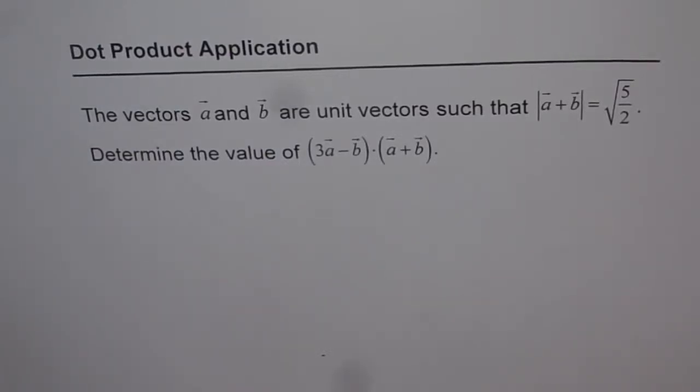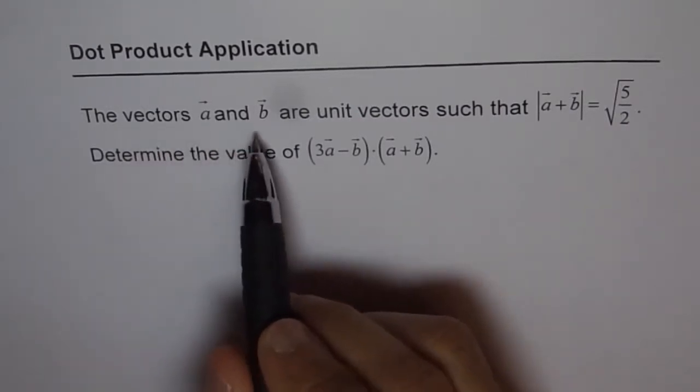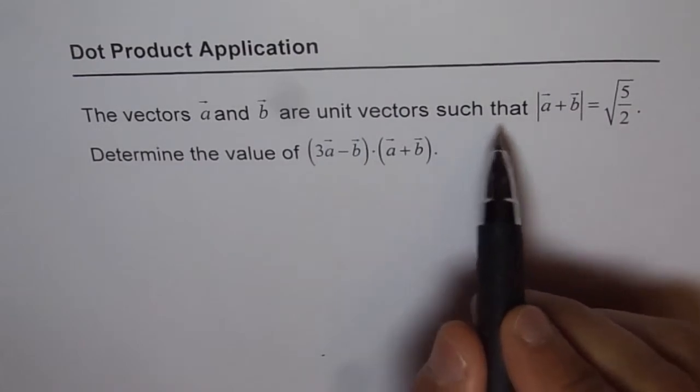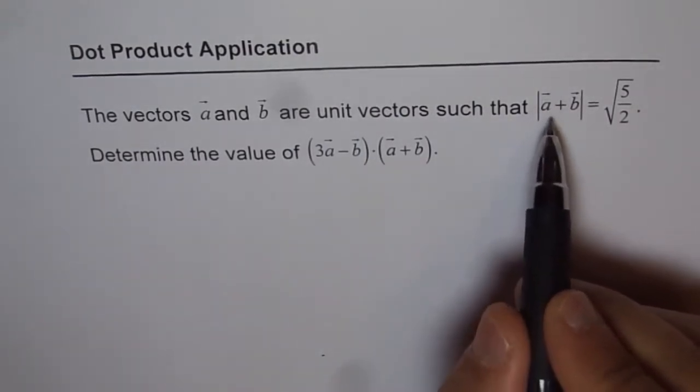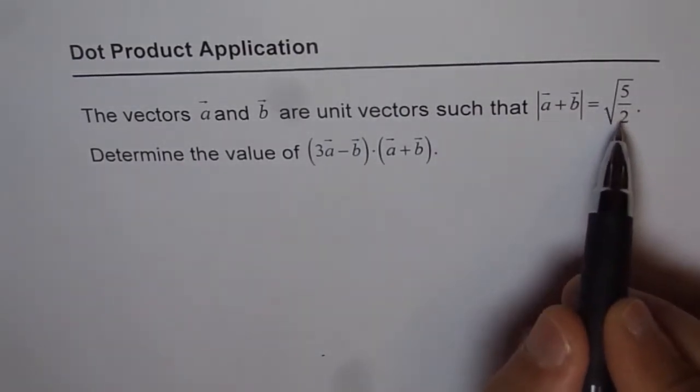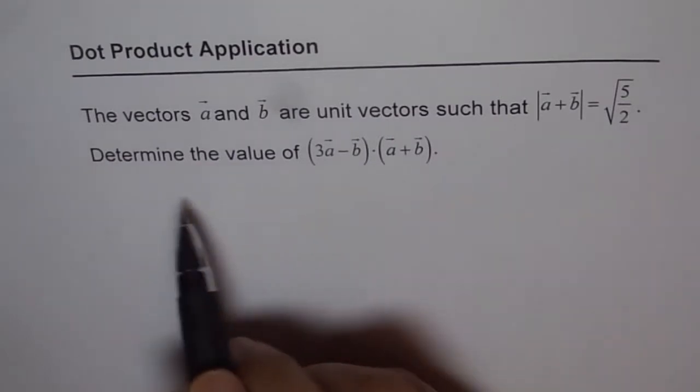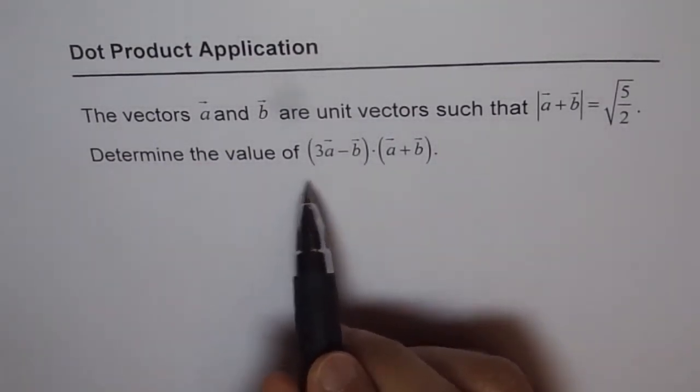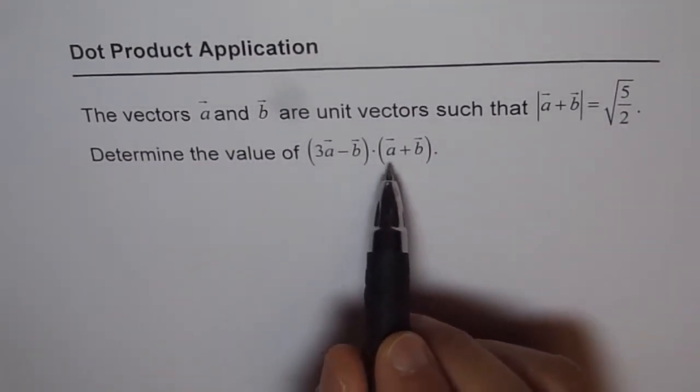Here's an interesting question on dot product application. We have seen this question in test papers so many times. The vectors a and b are unit vectors, such that the magnitude of a plus b is equal to square root of 5 over 2. Determine the value of 3a minus b dot a plus b.